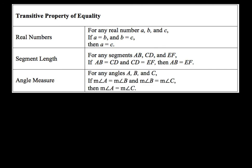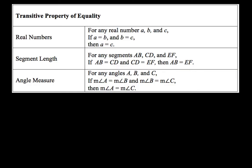Lastly, for angle measures: for any three angles A, B, and C, if the measure of angle A equals the measure of angle B, and the measure of angle B equals the measure of angle C, then the measure of angle A equals the measure of angle C. We're going to be applying these later on when we look at proofs in the next section. That concludes today's lesson on reasoning using properties from algebra. Hope you guys have a good day.